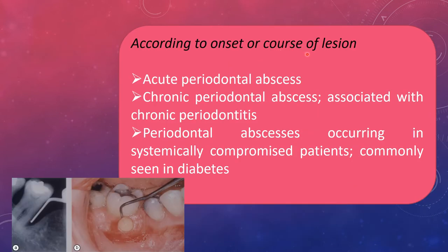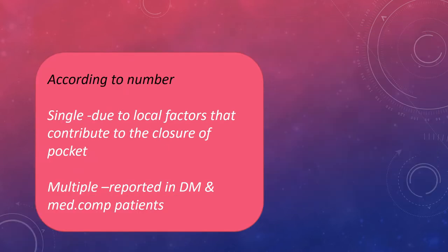According to onset or cause, the lesion can be acute periodontal abscess or chronic periodontal abscess associated with chronic periodontitis, or periodontal abscesses occurring in systemically compromised patients, commonly seen in diabetic patients. According to the number of abscesses, it is classified into single and multiple. Single abscesses are due to local factors that contribute to closure of the pocket, whereas multiple abscesses are mostly reported in diabetes mellitus and medically compromised patients.